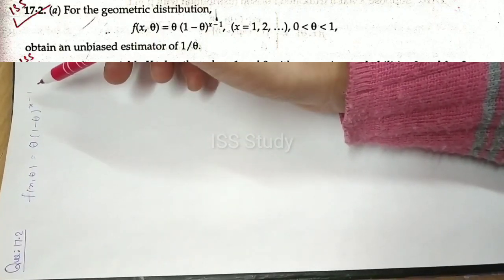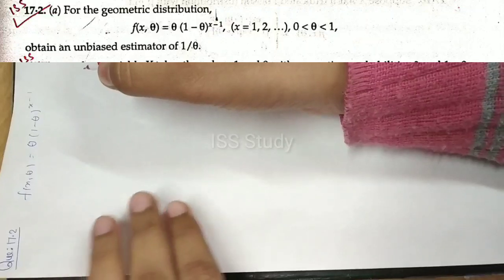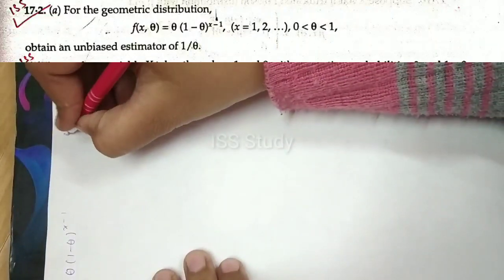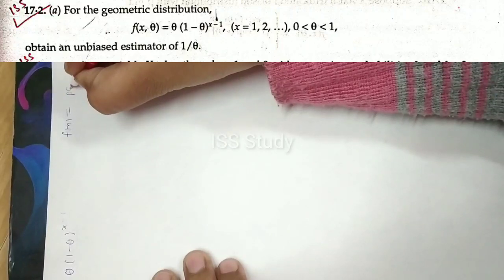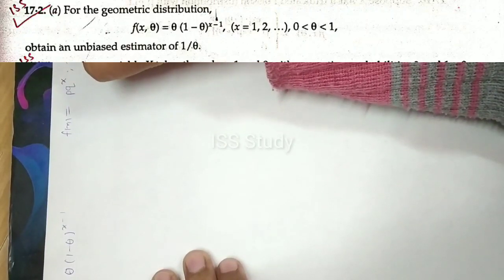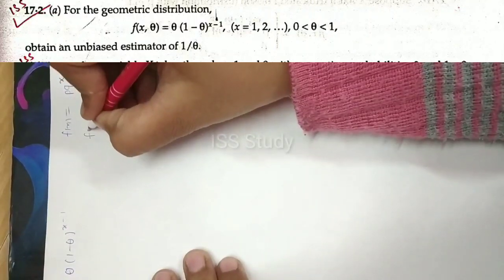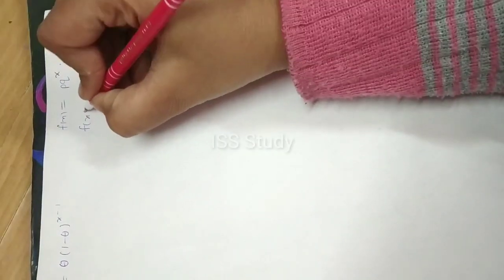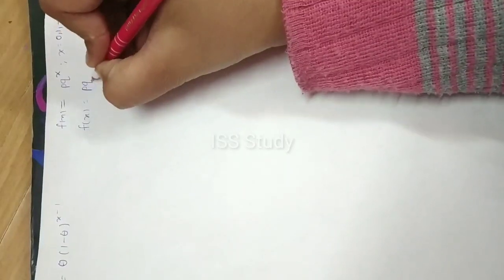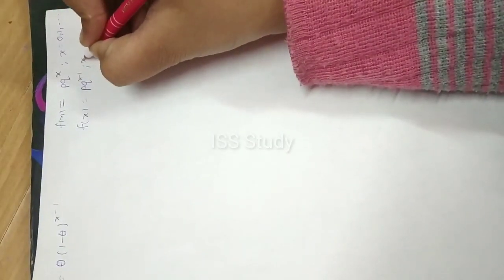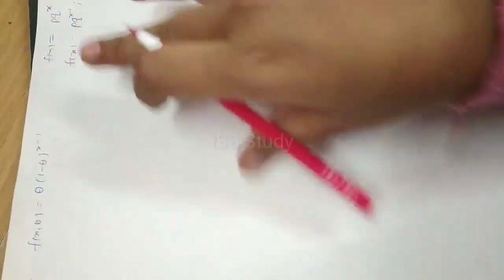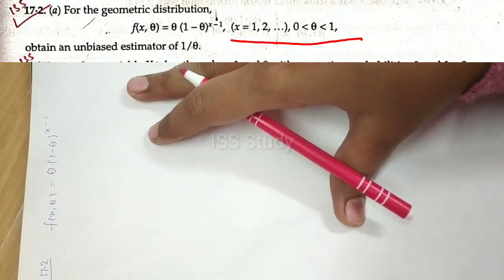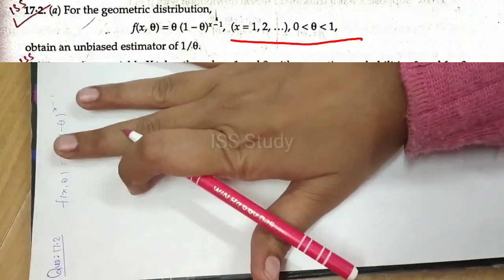If you know this, it is a very good thing. And if you don't know, you can see that the geometric distribution form is p times q to the power x, where x ranges from 0, 1, 2, and so on. The Pascal geometric distribution is p times q to the power x minus 1, where x goes from 1, 2, up to infinity. In this question, the range of x starts from 1, so this is a Pascal geometric distribution.